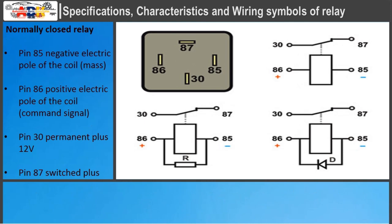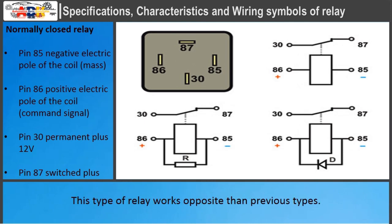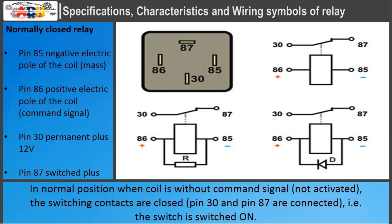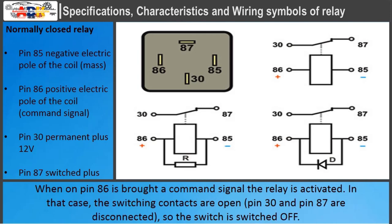Normally closed relay: this type works opposite to the previous types. In normal position when the coil has no command signal, the switching contacts are closed and pin 30 and pin 87 are connected. When a command signal is brought on pin 86, the relay is activated. In that case the switching contacts are open, pin 30 and pin 87 are disconnected, so the switch is switched off.